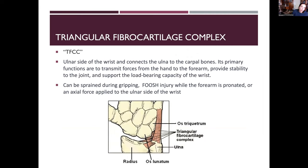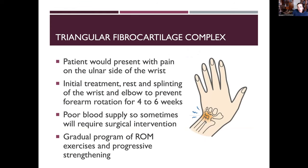TFCC patients present with pain on the ulnar side of the wrist. Initial treatment is rest and splinting of the wrist and elbow to prevent forearm rotation — pronation and supination — for four to six weeks. There is poor blood supply to this area, so surgery is sometimes required. Treatment then follows a gradual program of range of motion and progressive strengthening per physician protocol.